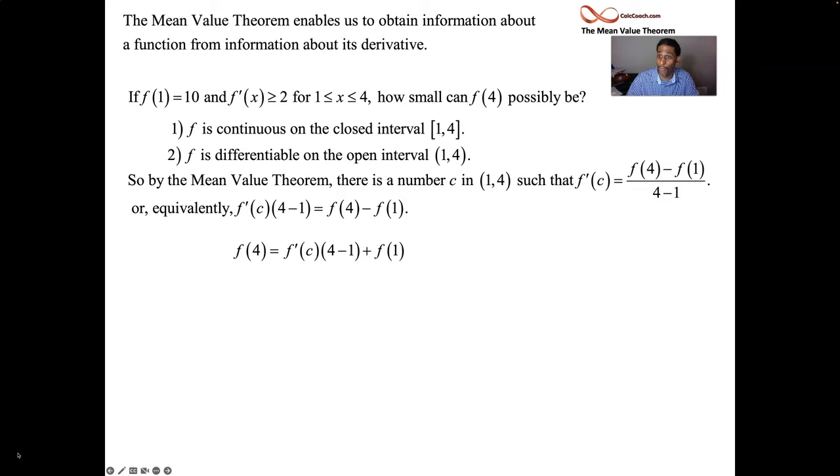So I want to know how small f of 4 can possibly be. I know that my derivative is always bigger than or equal to 2. So if I want to know how small f of 4 can be, then I know that I can switch that equals 2 to a greater than or equal to and put in the smallest possible value of f prime of x on that interval. Maybe it happens more than one time, but I'm sure it does happen at least once that my derivative is equal to 2 someplace. And that would then lead to the smallest possible value for f of 4.